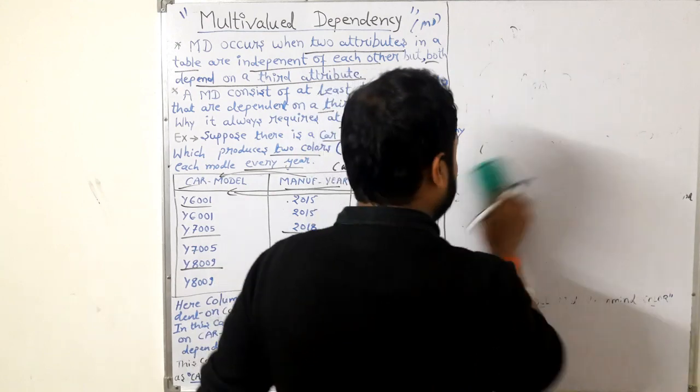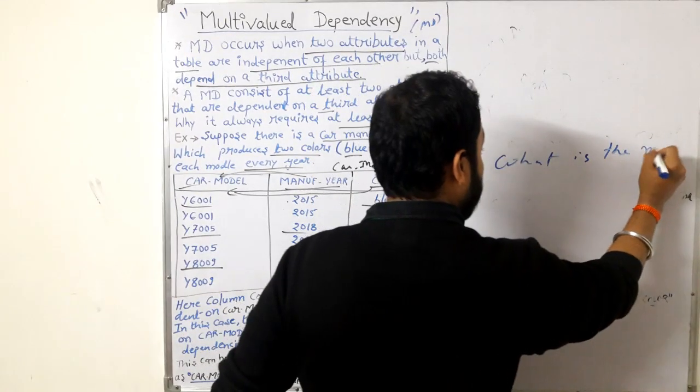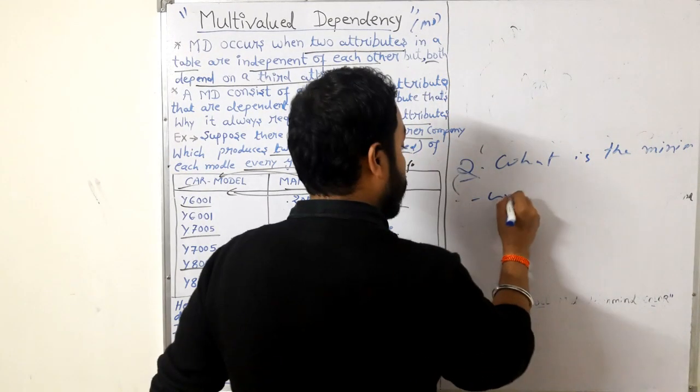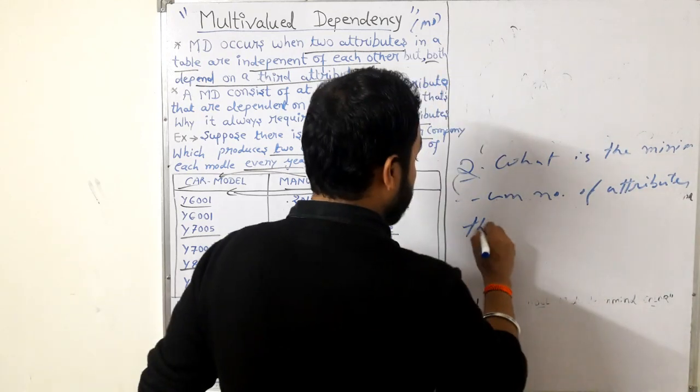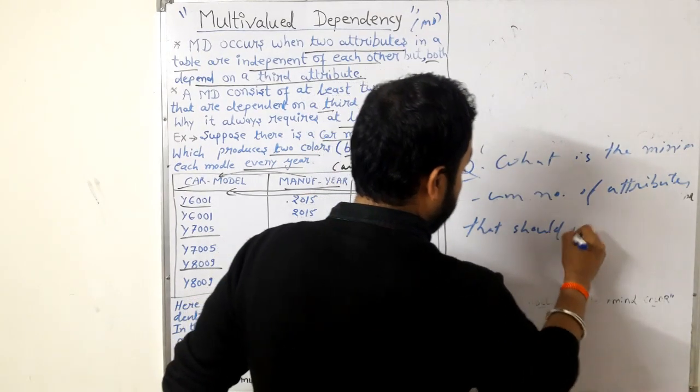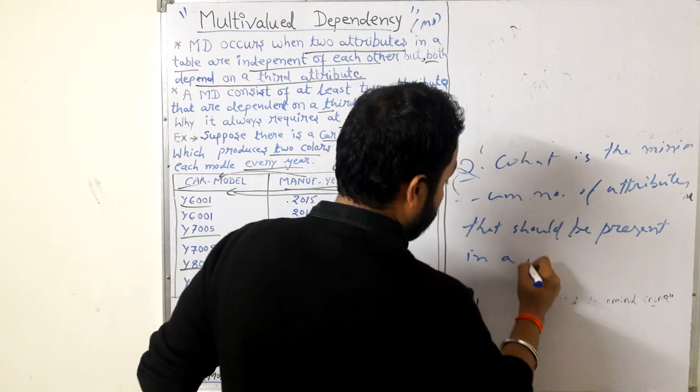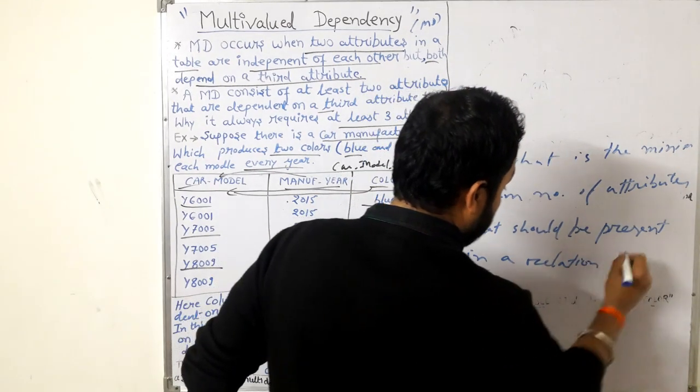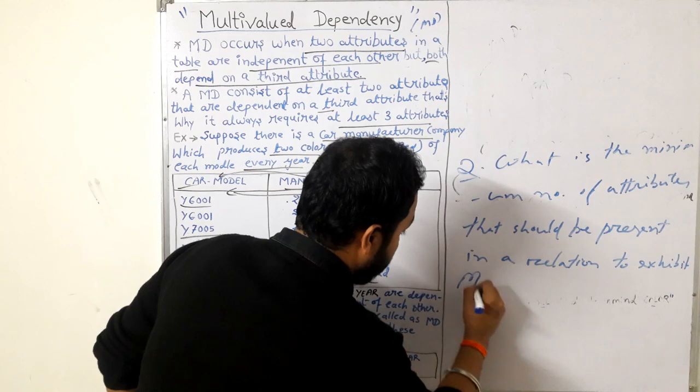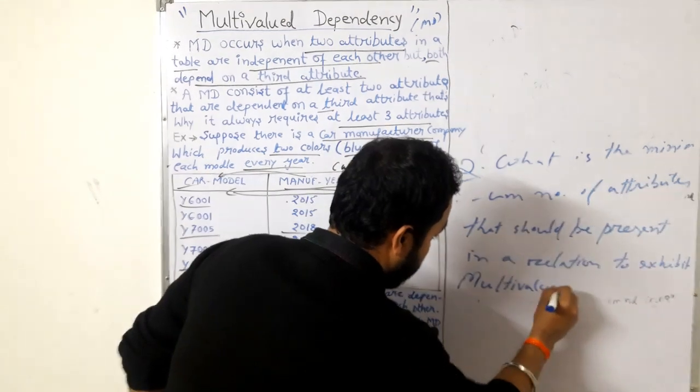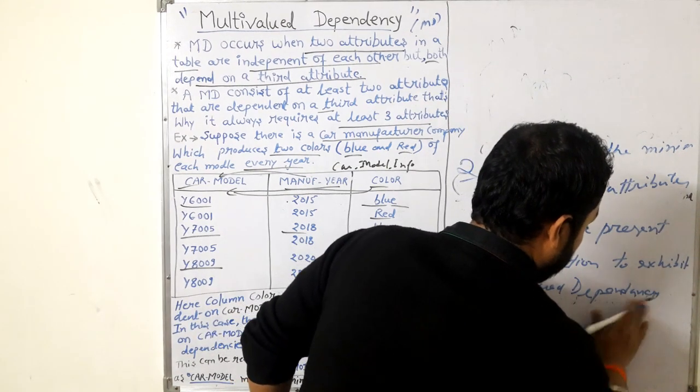Today I am going to ask one question. What is the minimum number of attributes that should be present in a relation to exhibit multi-valued dependency, that is MD?